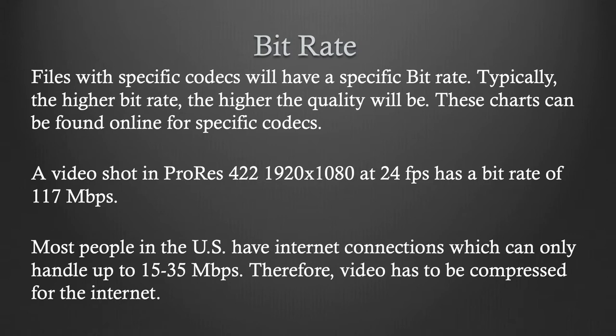For instance, a video shot in ProRes 422 at 1920x1080 at 24 frames per second has a bitrate of 117 megabits per second. As you go to ProRes HQ, you get higher megabits per second and higher quality. If you've got a camera that outputs 10-bit quality and it's compressed footage, going above and beyond ProRes 422 is going to be unnecessary — just redundant data you don't need — and your files will be bigger and bulkier and tougher to deal with.